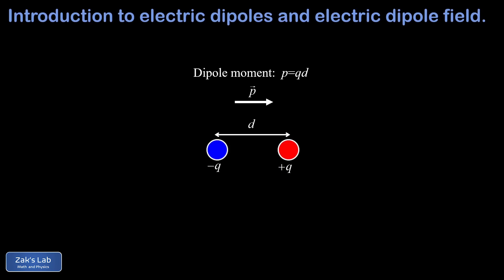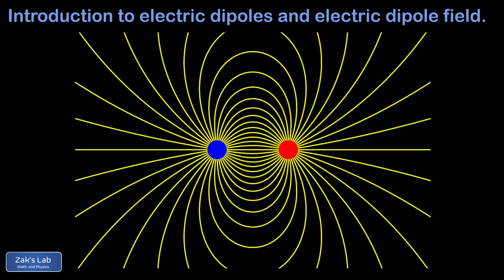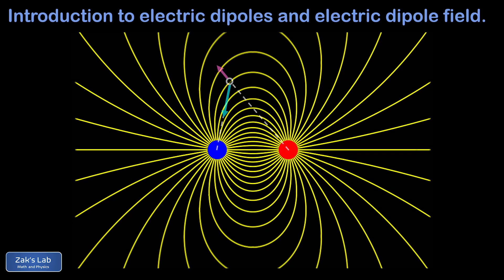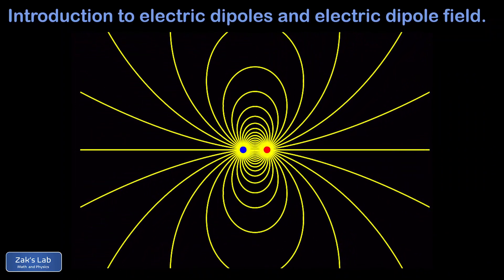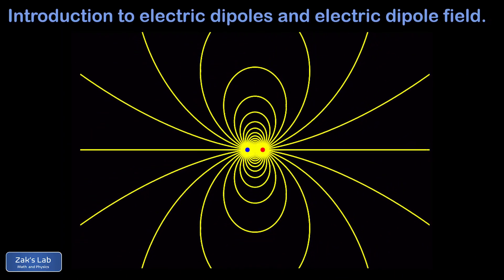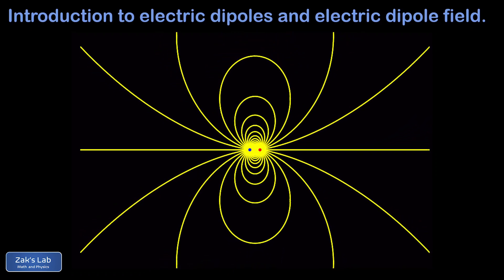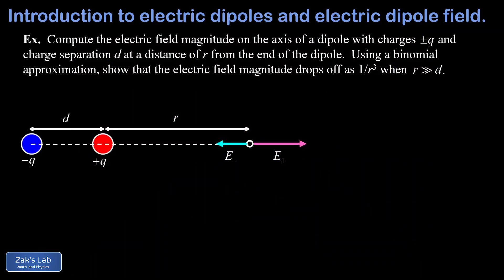In this video we introduce the electric dipole. We view the electric field surrounding a dipole and do some qualitative vector addition to justify the shape of that field. We take a look at how the dipole field simplifies in the large distance limit, and finally we calculate the electric field magnitude on the axis of an electric dipole. Then we perform a large distance approximation using the binomial approximation — a truncated Taylor series. So a really rich calculation in our example at the end this time.